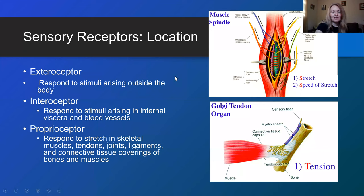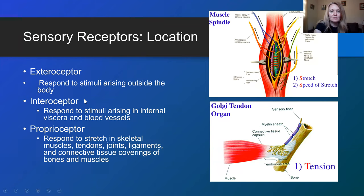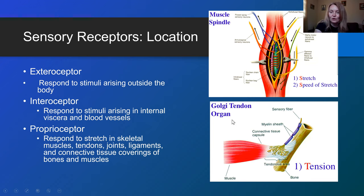We can also classify receptors based on location: exteroceptors, interoceptors, and proprioceptors. Exteroceptors respond to stimuli arising outside the body. Interoceptors respond to stimuli arising in internal viscera and blood vessels. Proprioceptors respond to stretch in skeletal muscles, tendons, joints, ligaments, and connective tissue covering bones and muscles. Examples of proprioceptors are the muscle spindle, which picks up stretch and speed of stretch, and the Golgi tendon organ, which picks up tension in tendons.